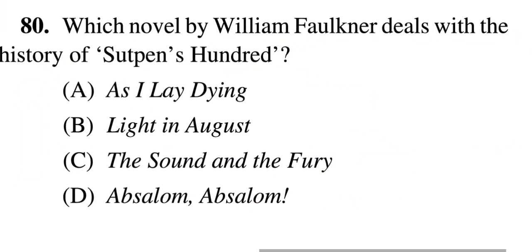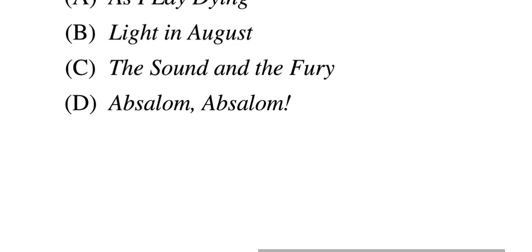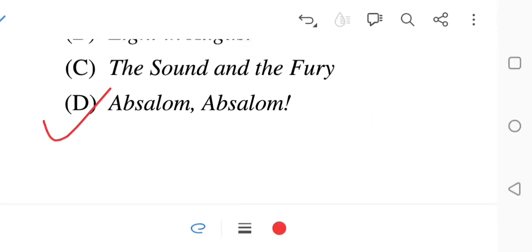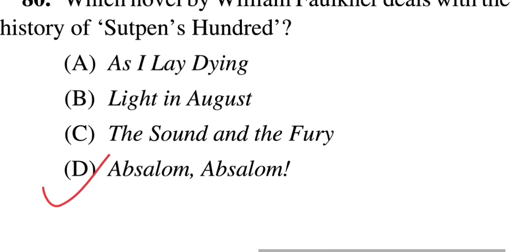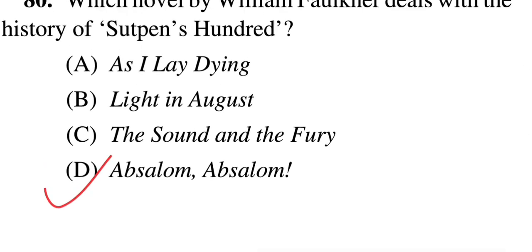Question 80: Which novel by William Faulkner deals with the history of Sutpen's Hundred? William Faulkner is a notable novelist — you have to know his work. Options: A — As I Lay Dying, B — Light in August, C — The Sound and the Fury, D — Absalom, Absalom! The correct answer is D — Absalom, Absalom! The other works — As I Lay Dying, Light in August, and The Sound and the Fury — are also very noteworthy.